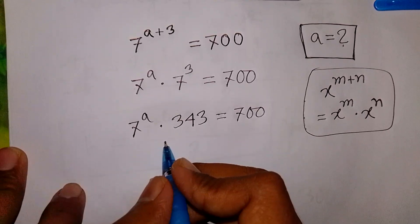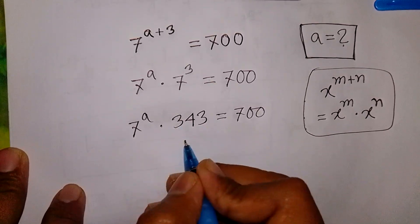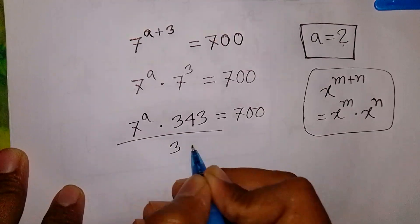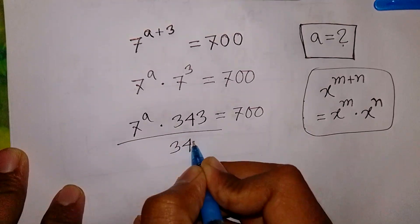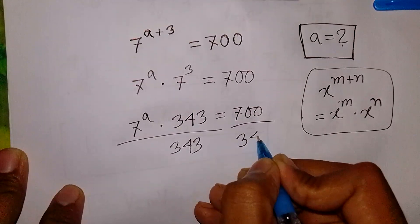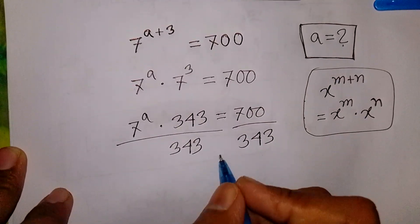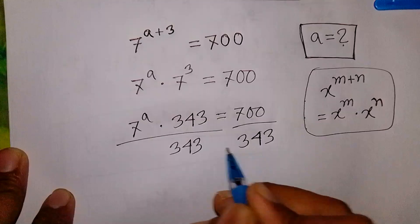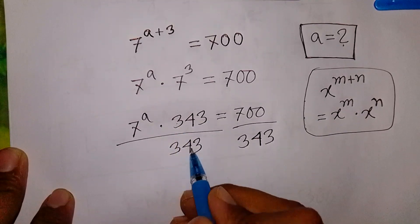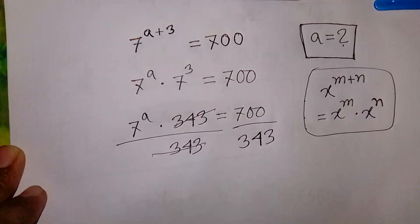In the next step, we divide both sides by 343. We divide by 343 on both sides, so the 343 on the left cancels out, leaving 7 to the power a equal to 700 over 343.